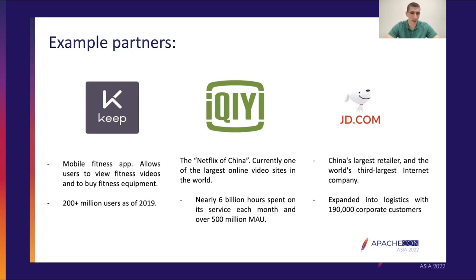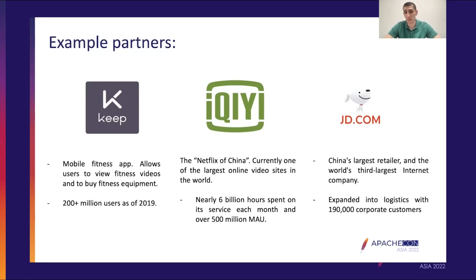These are impressive numbers that give you an idea of the stress such numbers put on their existing database infrastructure — and this is why they started to use ShardingSphere. The third example is China's largest retailer and the world's third largest internet company, JD.com, that started as an e-commerce company but has since expanded into fintech, logistics, and even entertainment. It is a very large company that has, among other things, over 190,000 corporate customers for its logistics business.